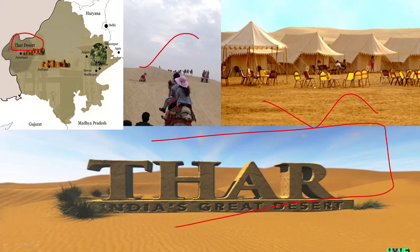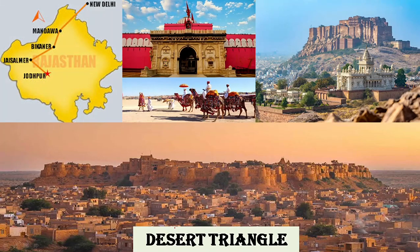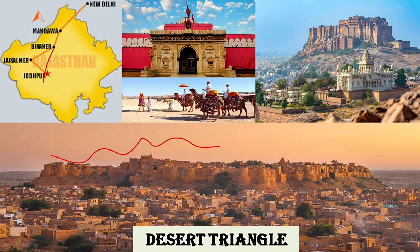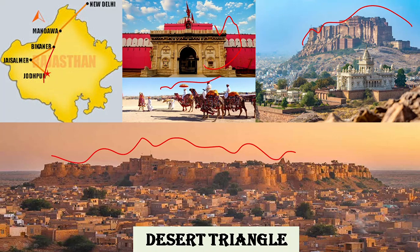Also in Rajasthan, we have the Desert Triangle formed by the cities of Jodhpur, Bikaner, and Jaisalmer. In Jaisalmer you'll find the beautiful golden fort — the whole city looks golden in color. Jodhpur has its famous fort and is known as the Blue City. In Bikaner you'll find camel safari and camel breeding farms.